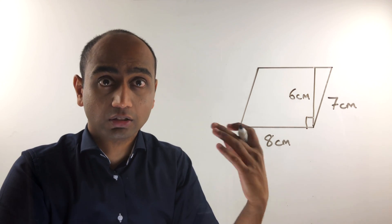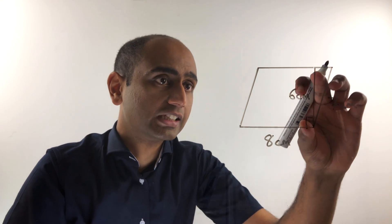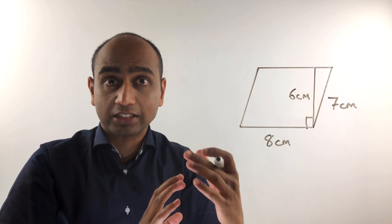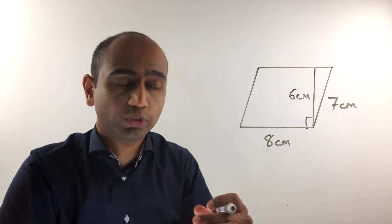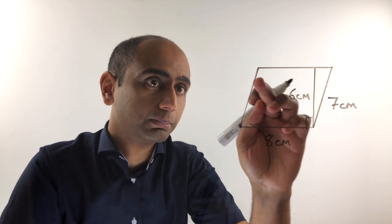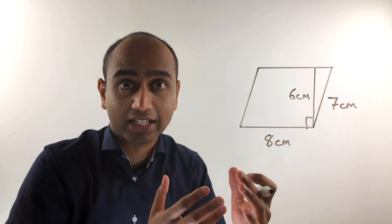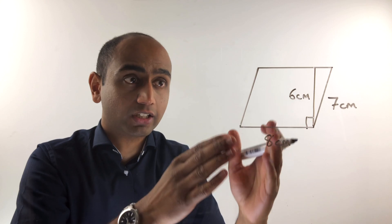That's enough information to work out the area of this parallelogram because what we can do is rearrange this parallelogram into a rectangle. Hopefully you can see that we could cut out this triangle on the right hand side and position it over here, so that we end up with a rectangle that is exactly the same area as the parallelogram.